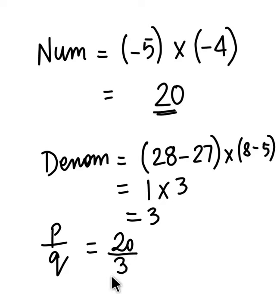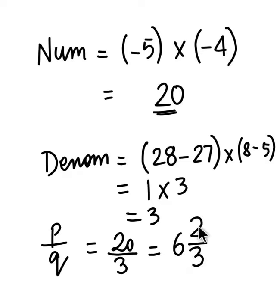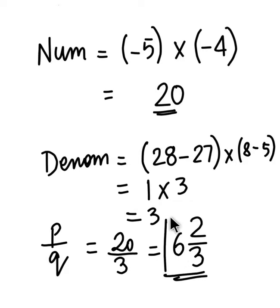We can write down the answer as 20 by 3. Since it is an improper fraction, we can convert it to a mixed fraction. 3 goes into 20 six times giving 18, with a remainder of 2. So the answer is 6 and 2 by 3. Even a mixed fraction is also a rational number, so you can write it as a mixed fraction.